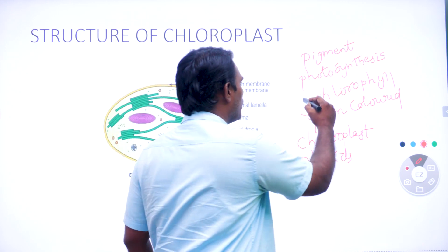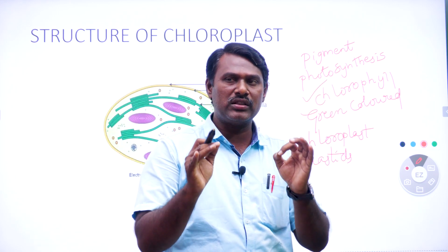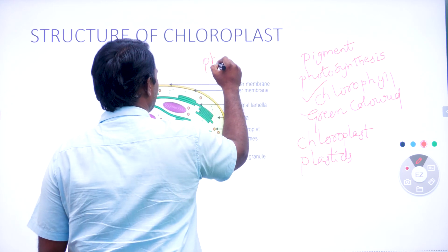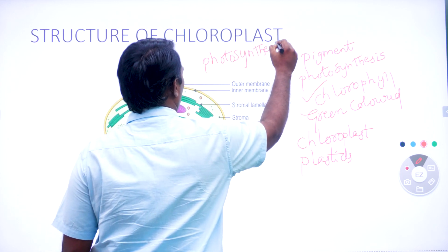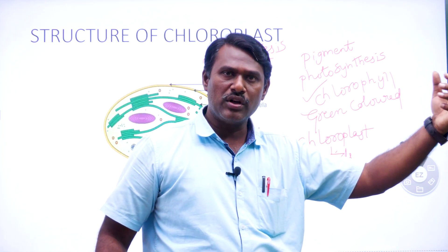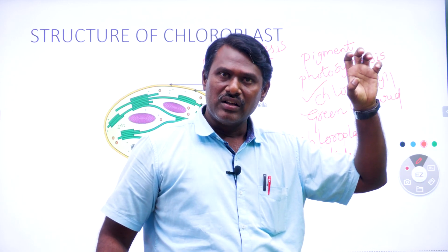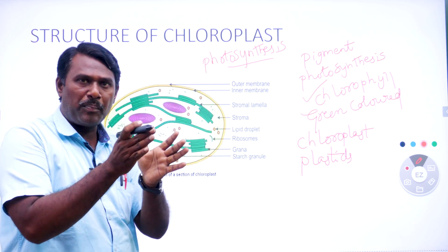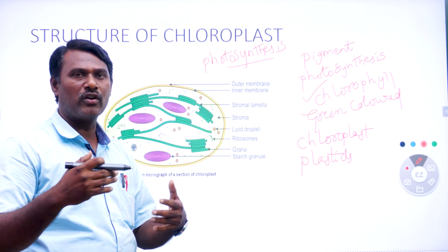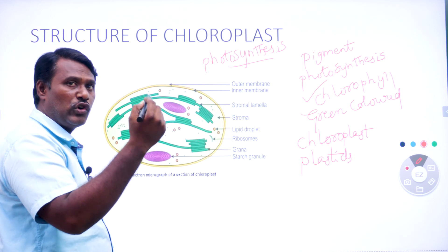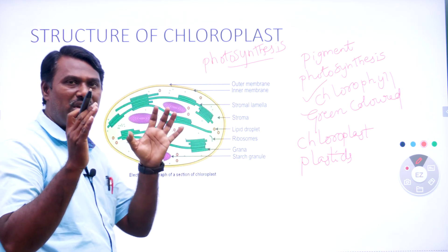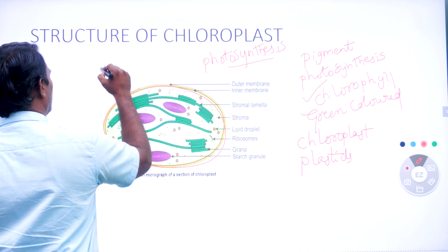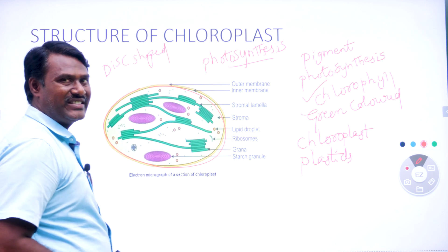The main function of the chloroplast is that it is mainly involved in the process of photosynthesis. We can see the chloroplast only with the help of a compound microscope or light microscope. When we observe the structure of chloroplast under a light microscope, we can see chloroplast is a disc-shaped structure. In some plants we can see chloroplast in round, oval, or spherical shapes.